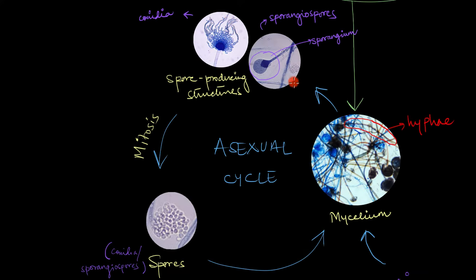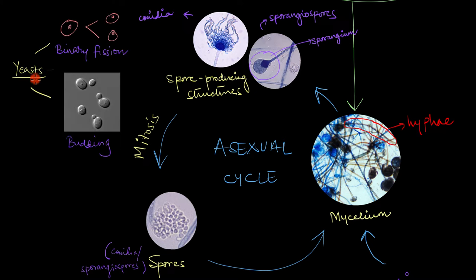Now some fungi don't really need spores to reproduce asexually. Asexual reproduction in fungi can be accomplished in a variety of different methods too. For example, unicellular fungi, aka yeasts, they can reproduce asexually via binary fission as well as budding.